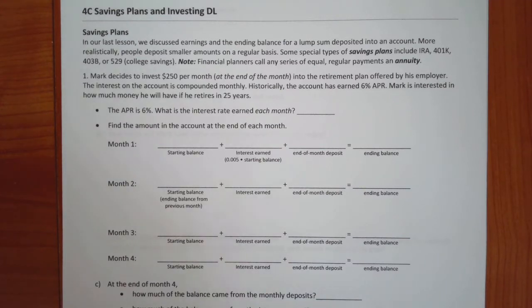But, what happens on those accounts is you just make a contribution, usually out of your paycheck, monthly. All right, so, I will also tell you that financial planners will call any series of equal regular payments an annuity. That means payments that you make or payments that are made to you. So, that's the terminology that financial planners will use.